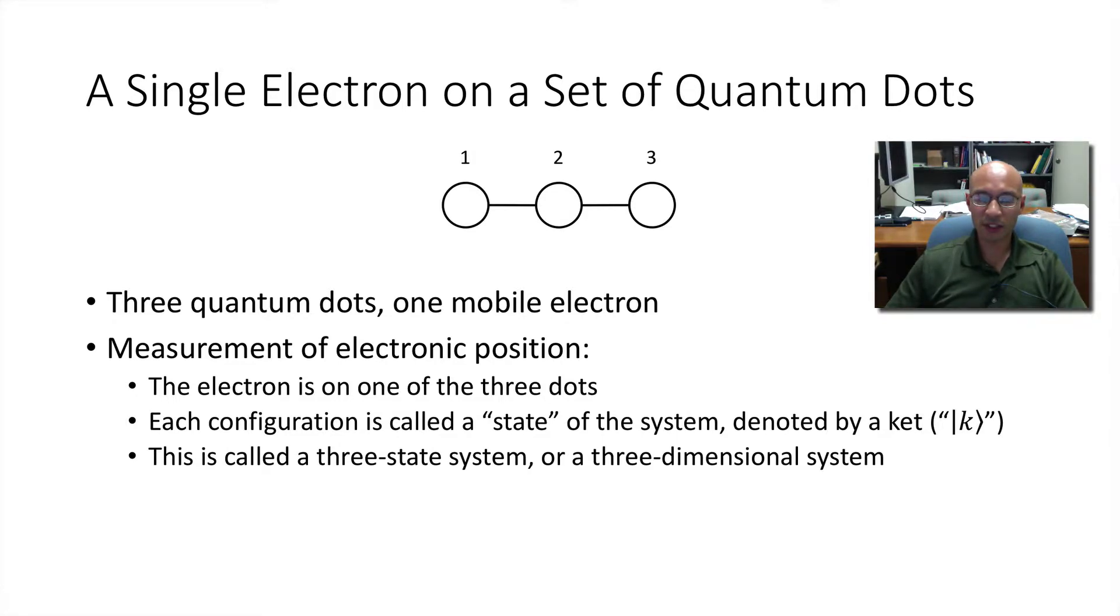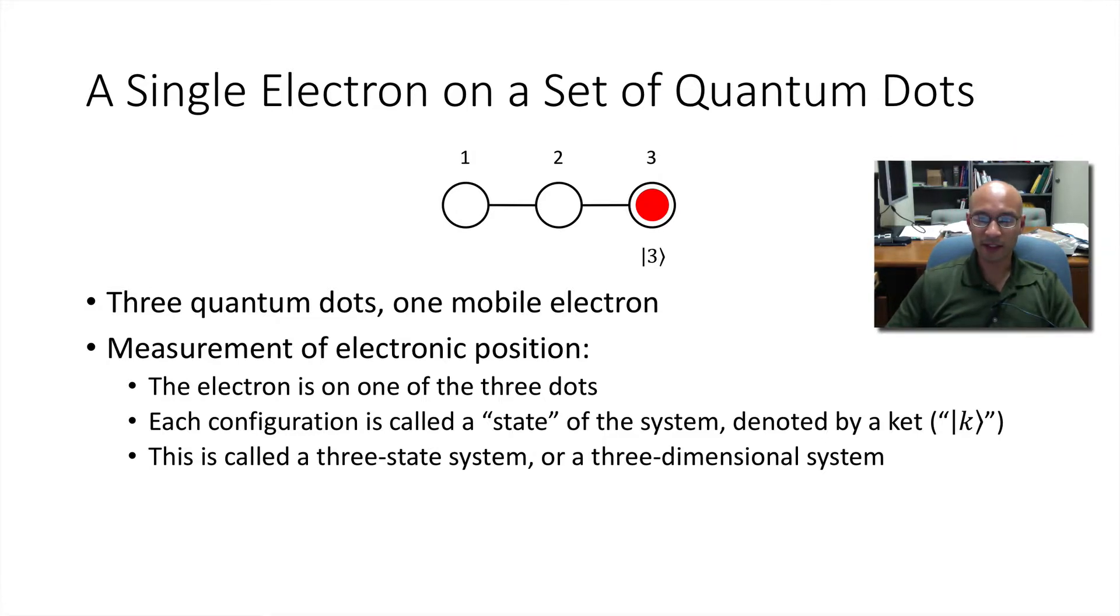So we'll call each configuration of the system a state and we'll denote it by Ket K. So if the electron is on dot one, we call this Ket one. Here's Ket two and Ket three. We refer to this as a three state system or a three dimensional system because there are three states here.